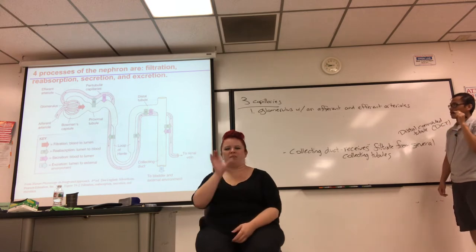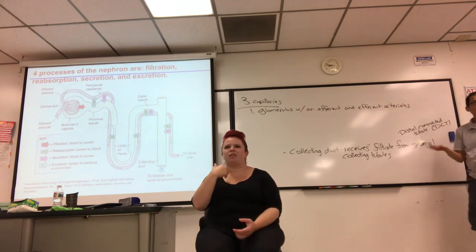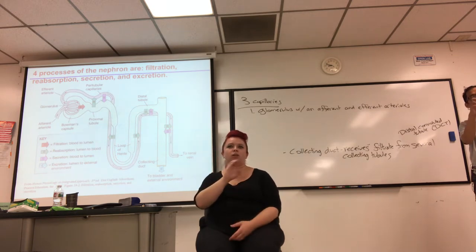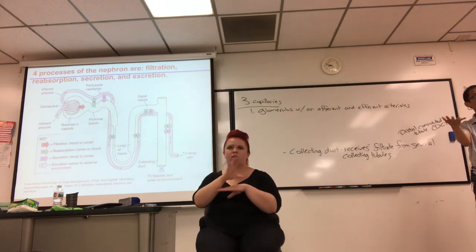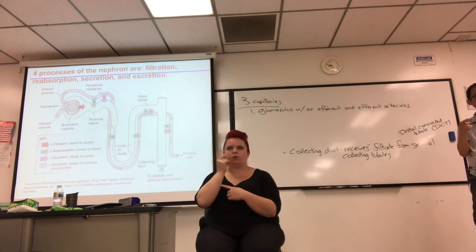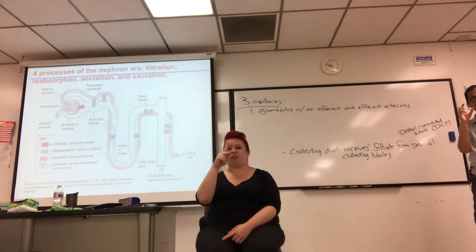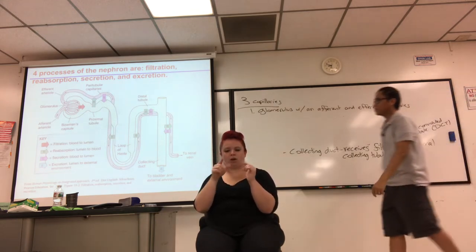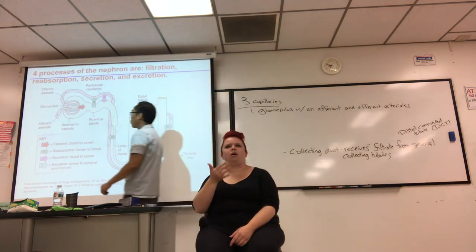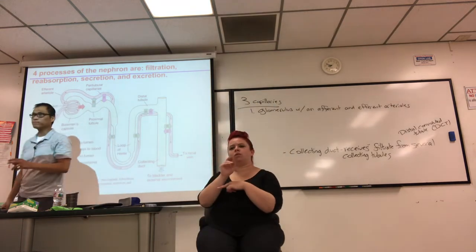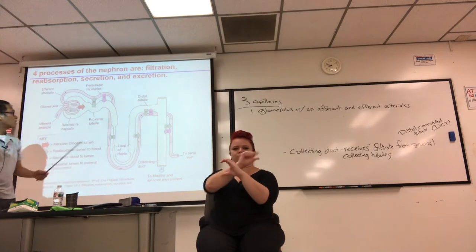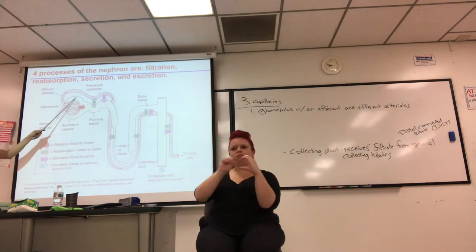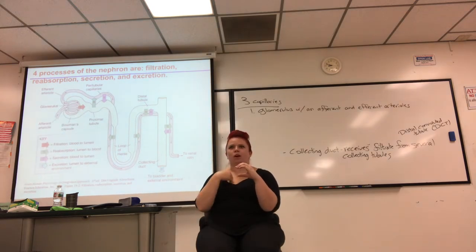That's weird — normally we see arteriole, capillary, then a venule. Here it goes arteriole, capillary, arteriole. Not only that, both arterioles are on the same side — you've got the capsule around the glomerulus and the tubule structure, so there's no venule on the other side. That's unusual.